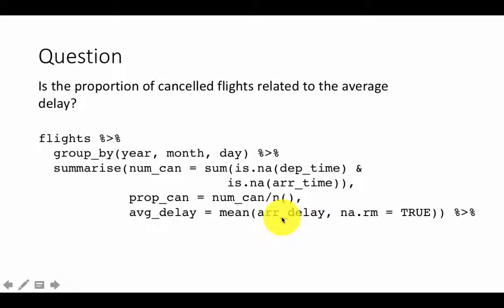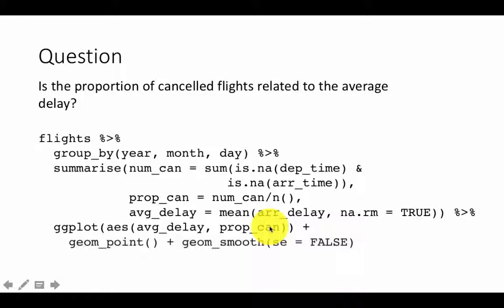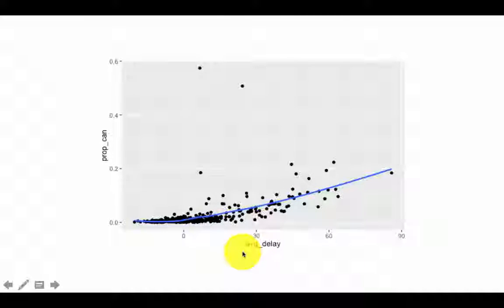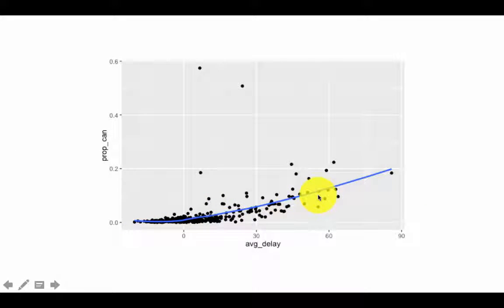Then we pipe into `ggplot()`, plotting average delay on the x-axis and proportion cancelled on the y-axis, using `geom_point()` and a smoothing line to see the trend. The result shows that as average delay increases, the proportion of cancellations also increases. I could have used alpha for transparency to show point density, but you can clearly see a fairly strong trend.